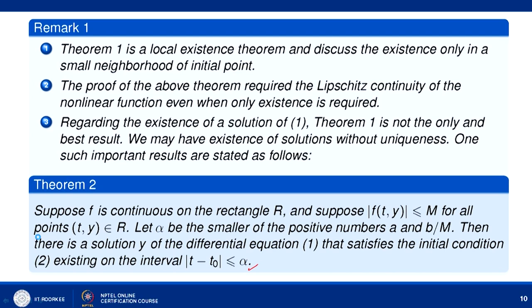We considered y' = y² with y(0) = 2. We showed that a solution actually exists on a larger interval, but if we use our existence and uniqueness theorem, this interval is quite small — given as |t| < 1/8. This says that our theorem is a local existence theorem which gives a solution only in a small neighbourhood of the initial point. The proof of this theorem requires Lipschitz continuity of the nonlinear function, even when we only require existence of the solution.